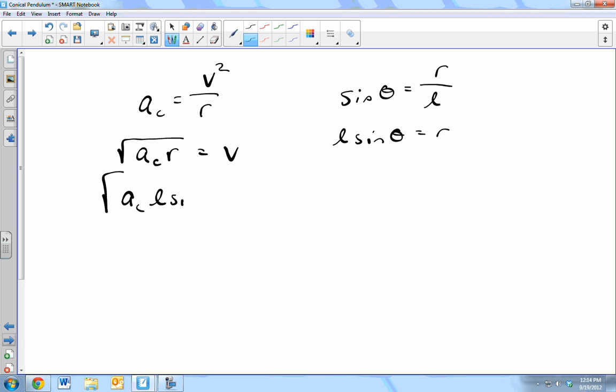ac length sine theta equals velocity. We know the acceleration, we know the length, we know the angle, so we can plug in our values and find that velocity.